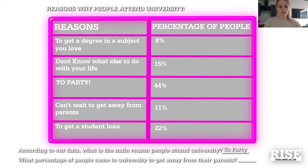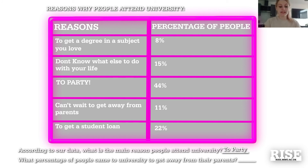I would have probably picked that answer too, though obviously in final year now I'm much more motivated. The next question asks what percent of people came to university to get away from their parents. Looking down the reasons column at 'can't wait to get away from your parents,' 11% of people chose that, so we just write 11%. Now you can have a go at answering the three other table questions — good luck!